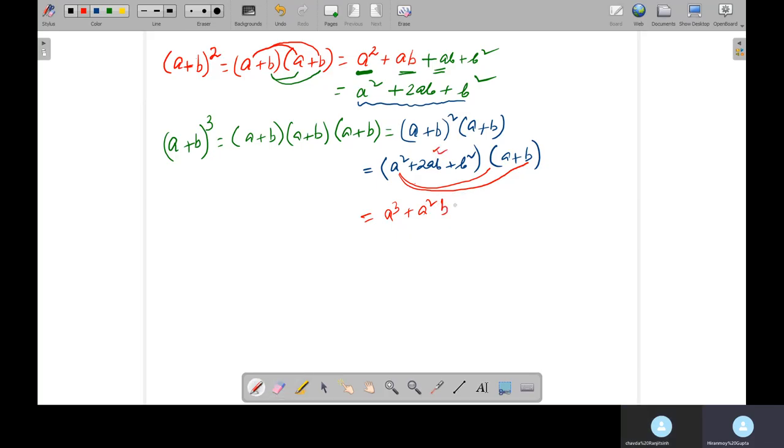Now this one into A, so I will get 2A square B plus 2A square B plus this one into B. So it will be 2AB square plus B square into A, so AB square and B square into B will be B cube. So the whole expression has become A cube plus 3A square B plus 3AB square plus B cube.